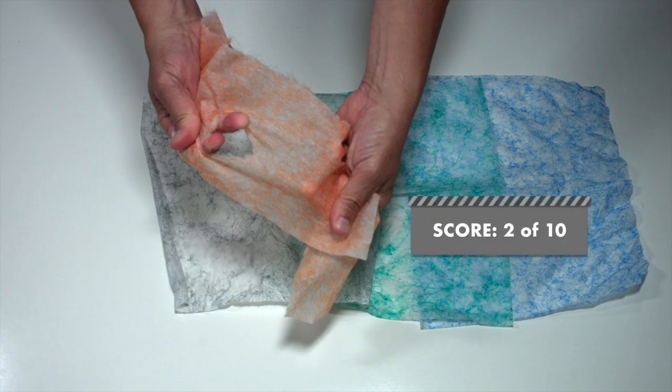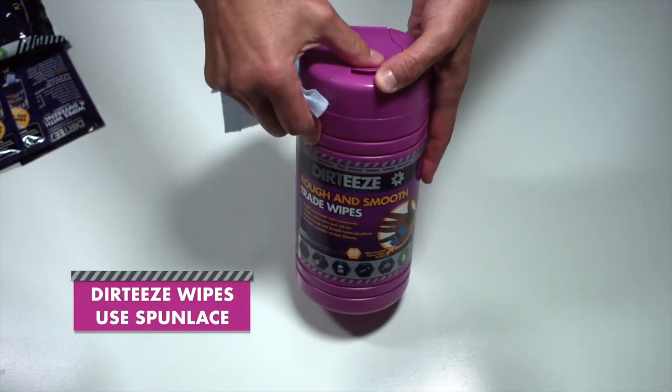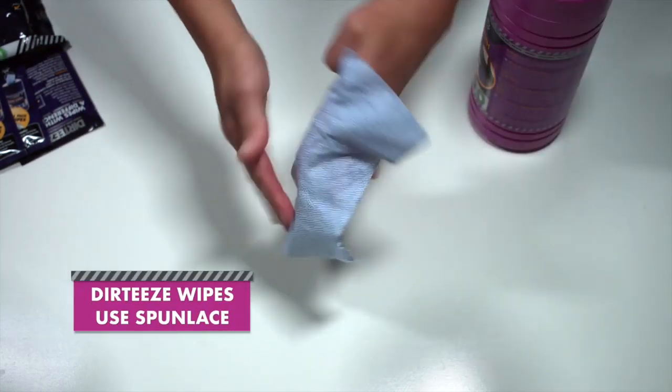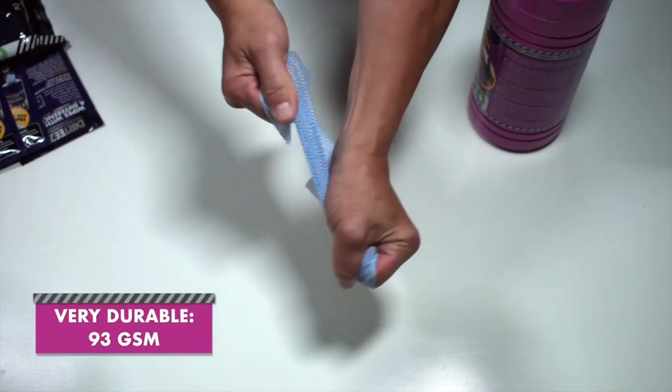Dirty's wipes are made from spun lace and have a smooth side and a beaded side to help scrub the caked-on materials. The weight of Dirty's wipes is 93 GSM.